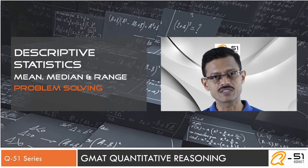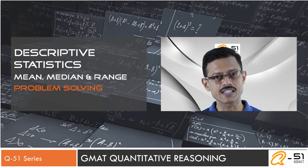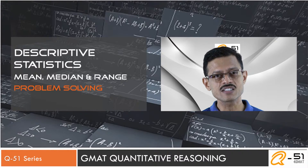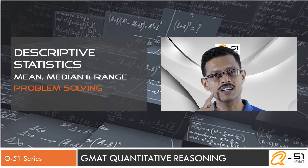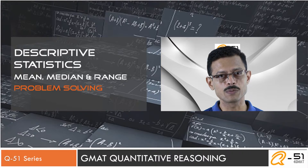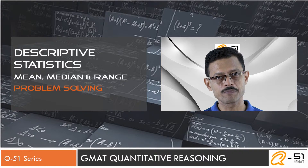For example, in this question they've said the numbers are distinct, which means no two numbers can be the same, and the numbers are prime, which means they are going to be positive and odd. Noting down these kinds of details — both for descriptive statistics and for data sufficiency questions involving number properties — will make a big difference in determining whether a statement is true or not.